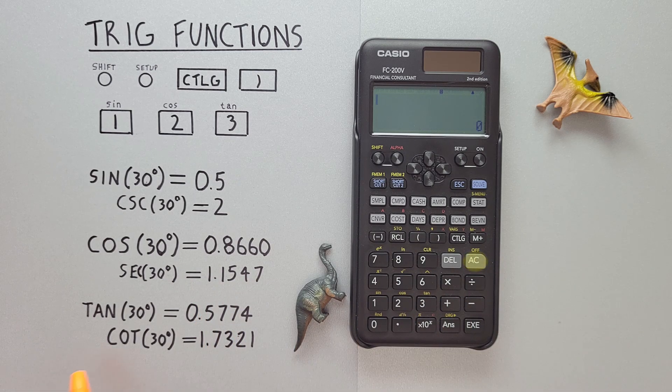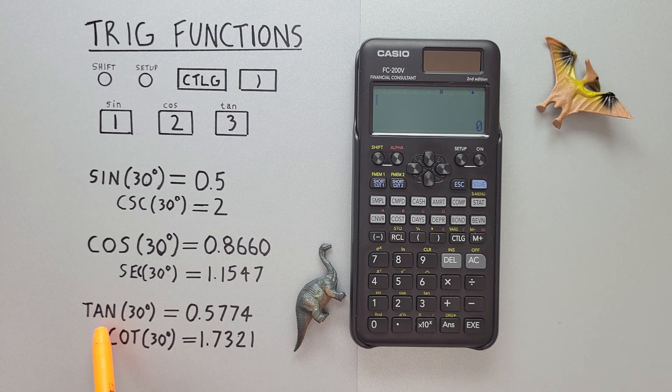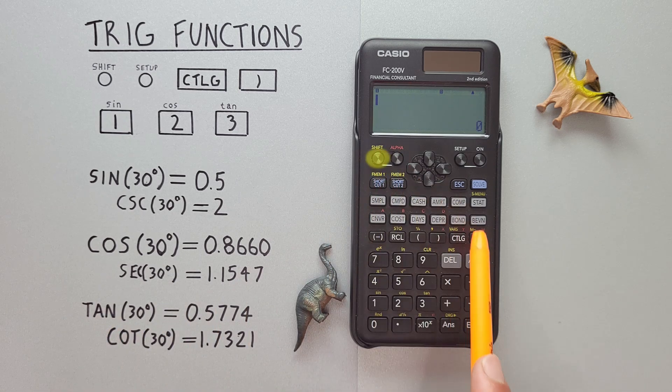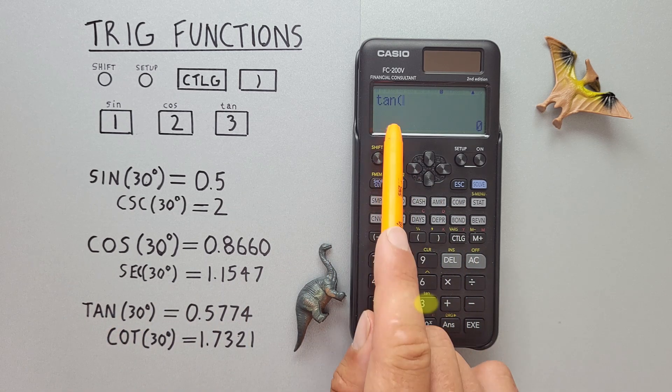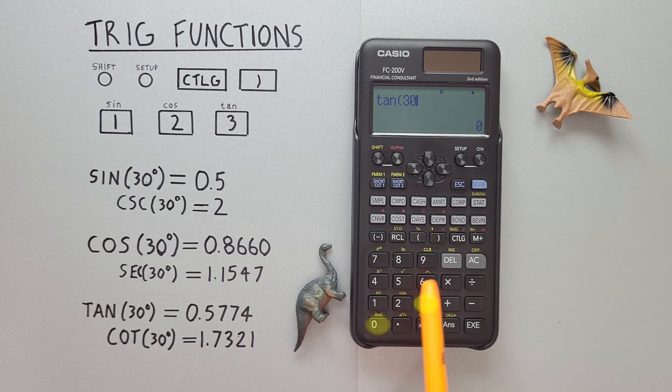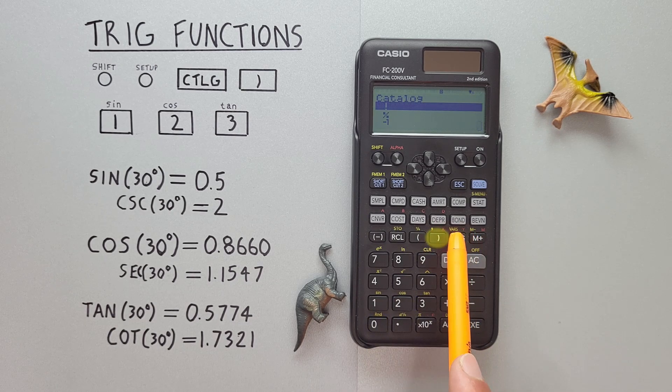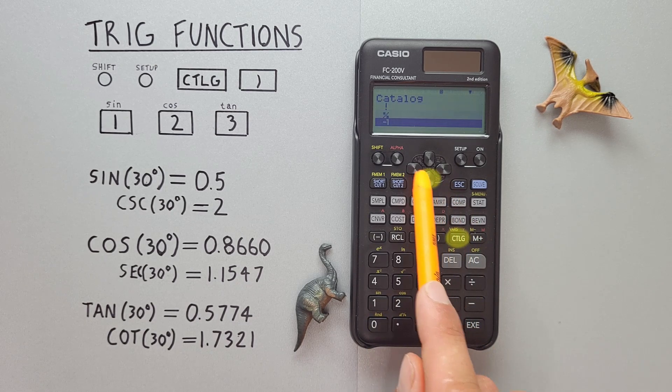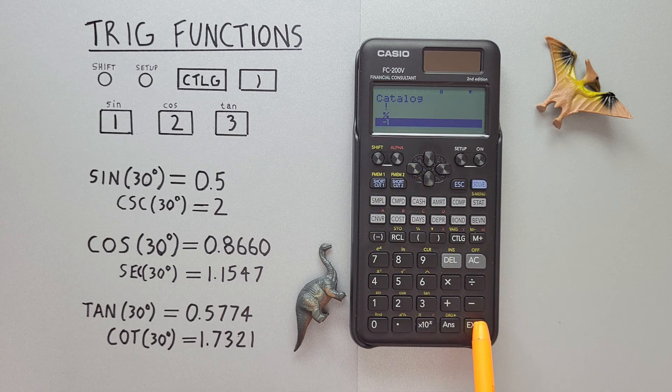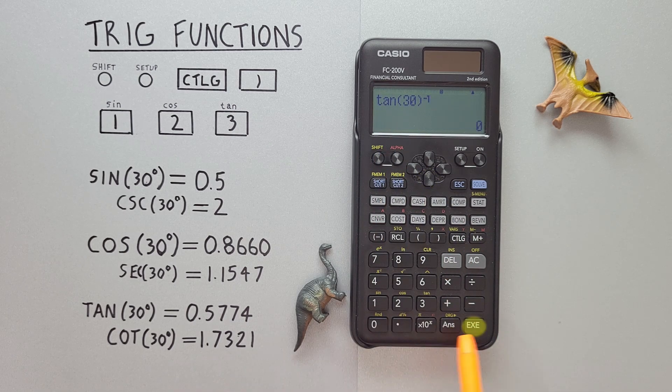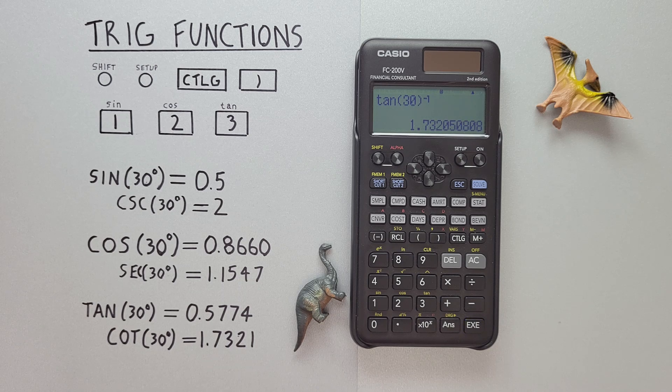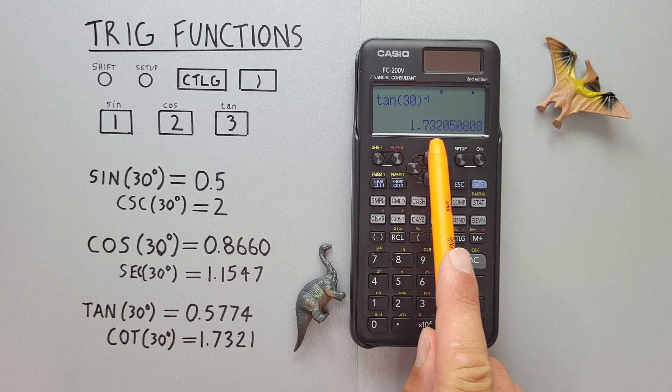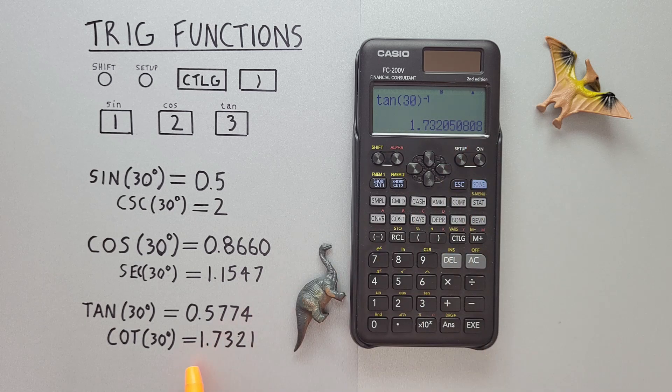For cotangent, we use tan. So we go shift three for tan. 30 degrees, close our bracket. Catalog, scroll down to negative one, and hit exe. And we get the cotangent of 30 degrees would round to 1.7321, etc, which is correct.